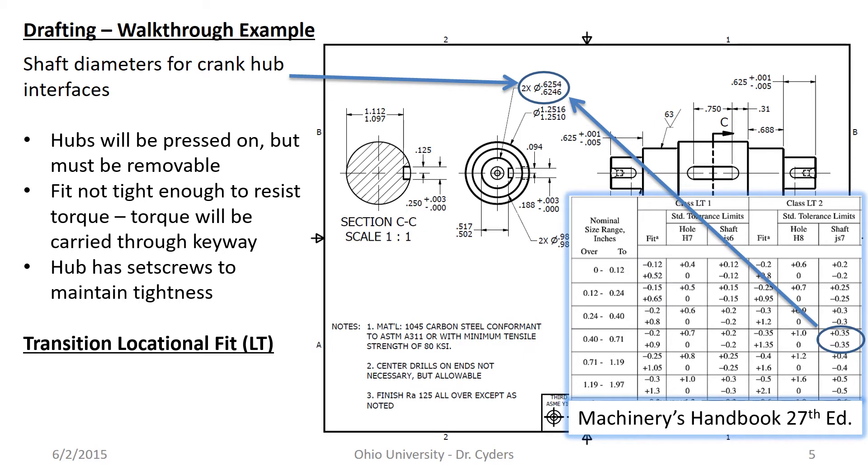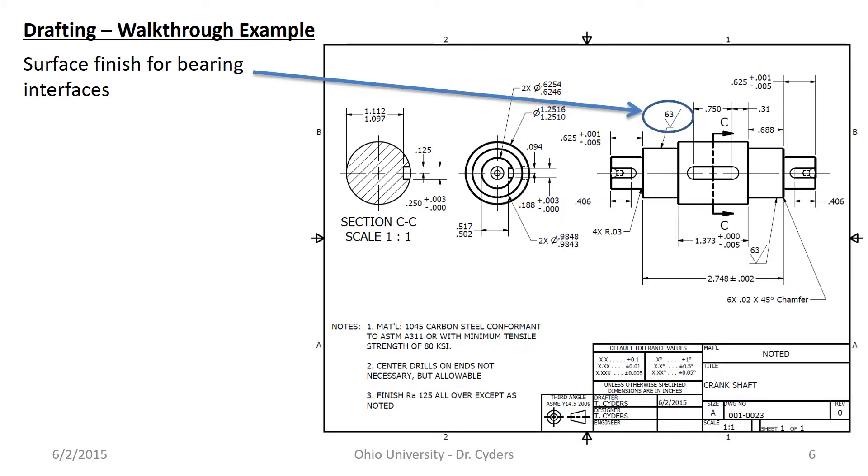So the surface finish for the bearing interfaces, again in the bearing manual it specifies how smooth that surface needs to be. In this case I've specified an RA 63 which is straight out of the bearing manual. They're normal class bearings between small and large. Surface will be turned on a lathe so I can go to machinery's handbook and look up okay this is a pretty typical steel, it's a machinable steel because I can see straight away that I've spec'd 1045 carbon steel and so that's decently machinable. I should be able to get a good surface finish and so I can look up a typical surface finish attainable on a lathe. Then RA 63 is actually very easy to get on a lathe with a machinable material like 1045.